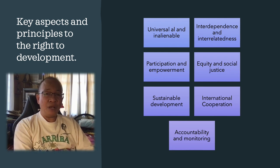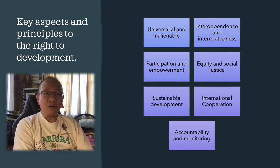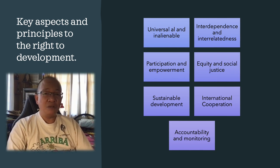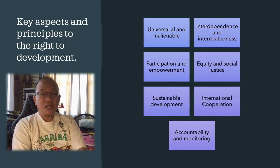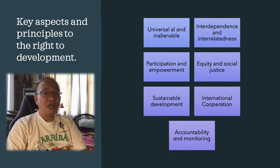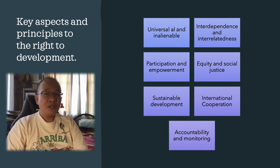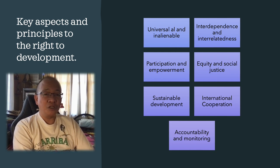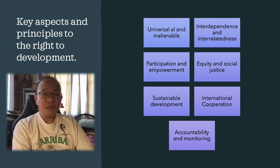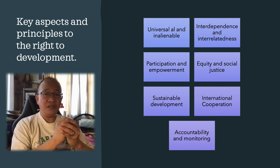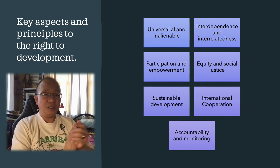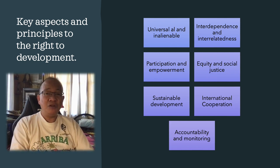And seven is accountability and monitoring. States have an obligation to take measures to realize the right to development, including adopting national development strategies, allocating resources effectively, and implementing policies that prioritize human rights and sustainable development objectives. International mechanisms such as the United Nations Human Rights Council working groups on the right to development monitor and assess progress in its implementation. The right to development is enshrined in various international instruments, including the Declaration on the Right to Development adopted by the United Nations General Assembly in 1986. While it is not yet recognized as a legally binding treaty, efforts continue to strengthen its implementation as an integral part of the international human rights framework.